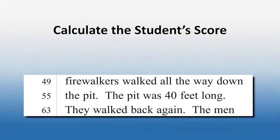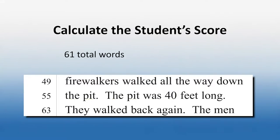Christopher read up to the word 40 in the sentence "The pit was 40 feet long" — that's word number 61 in the story. He made 13 errors, so his score is 48 words correct per minute. Did you get a similar score? Let's listen to Christopher read again, this time marking his errors together.